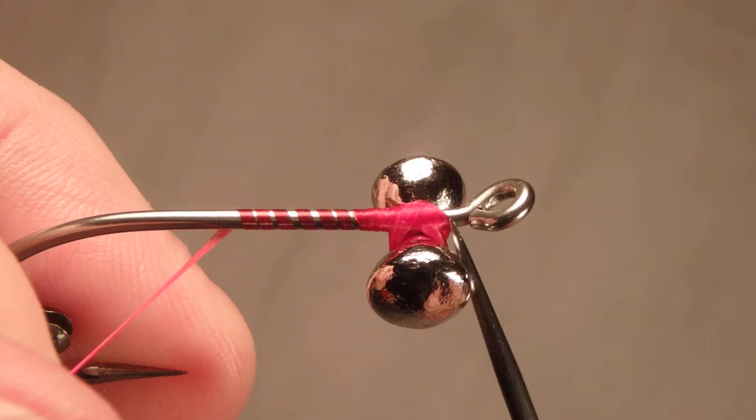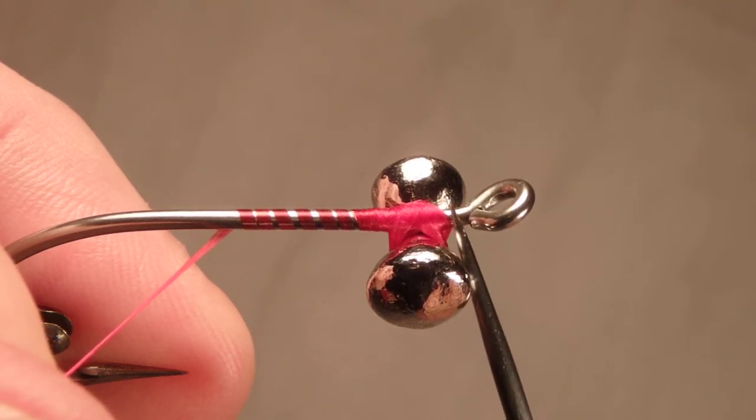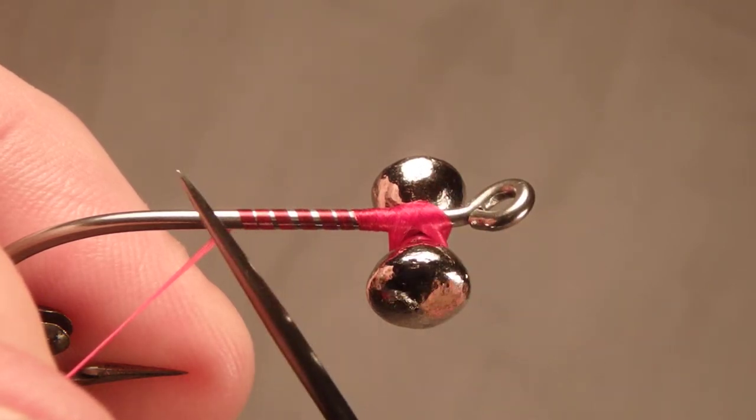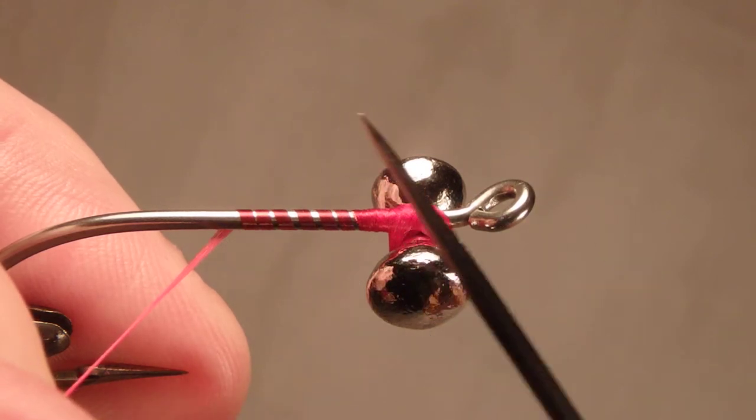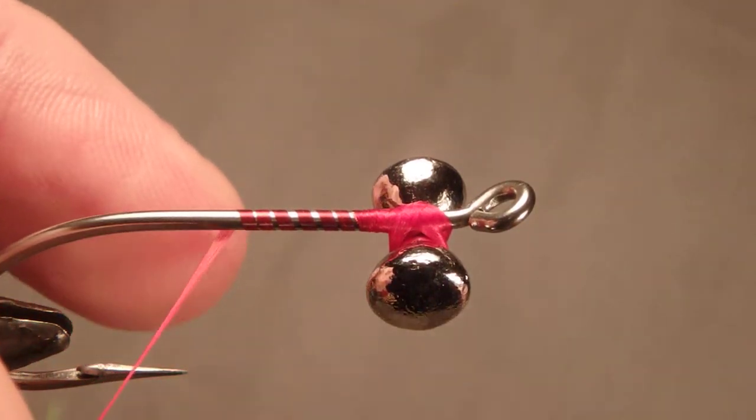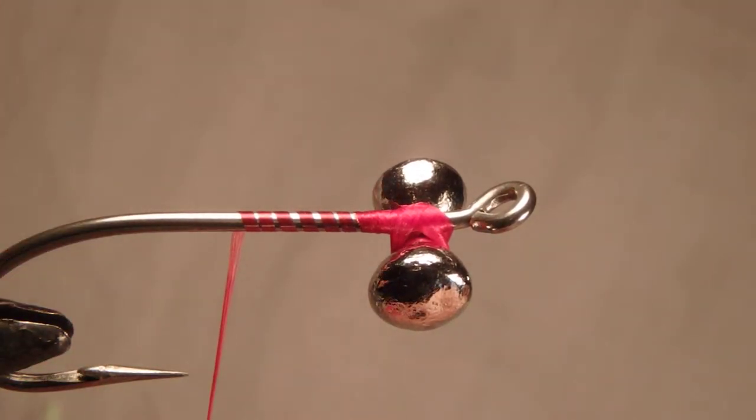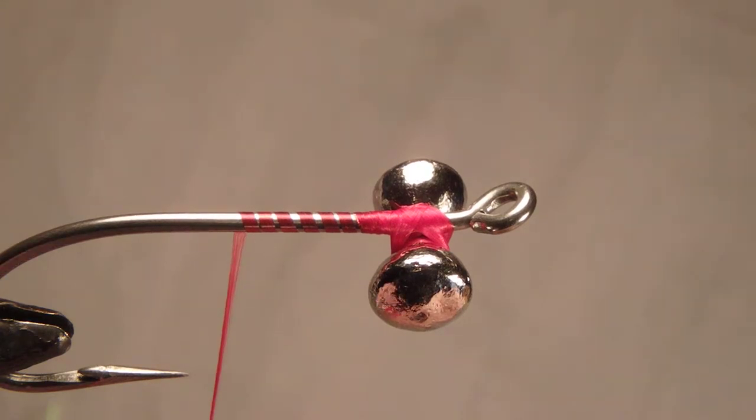Still you see the head area of the fly is bare. Cover all of the thread with Sally Hansen. Let it dry and you're ready to attach the trailer hook.